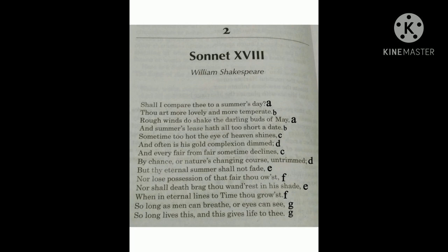One more thing: in a Shakespearean sonnet, which consists of 14 lines written in iambic pentameter, every line contains 10 syllables that occur as stressed-unstressed pairs. The first 12 lines are divided into 3 stanzas of 4 lines each, known as quatrains, where every alternate line rhymes. The last two lines form a couplet that concludes the whole poem.